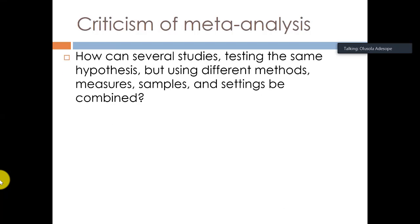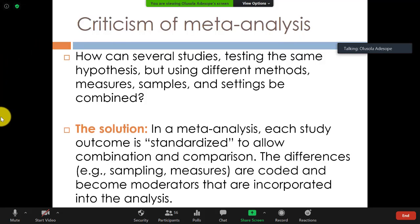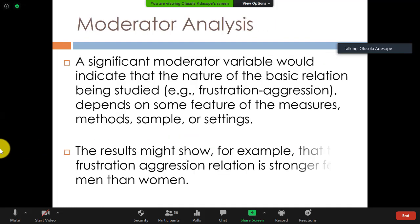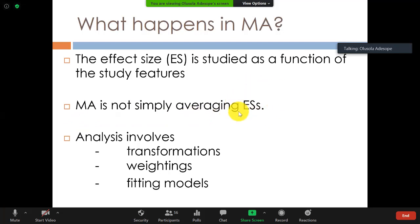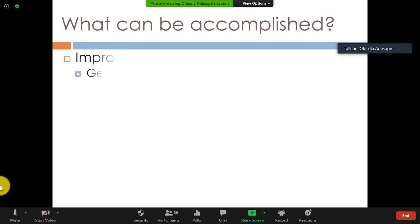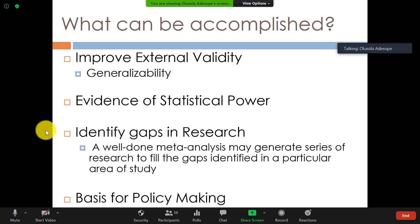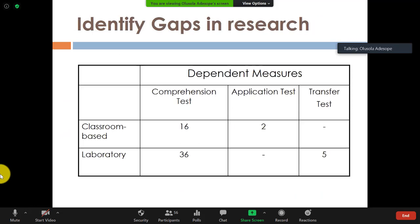These are some of the criticisms, and I spoke through those. We standardize — we do not just put things together anyhow. There are different types of things we do: moderator analysis, and we use effect size, which is a standardized form of statistics. We do not simply average effect sizes — the analysis involves transformations, weighting models, and more. What can be accomplished in a meta-analysis: we can improve external validity, our results can be more generalizable, it provides evidence of statistical power, helps identify gaps in research, and can serve as a basis for policy-making.